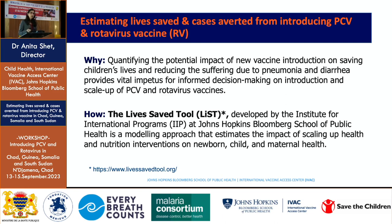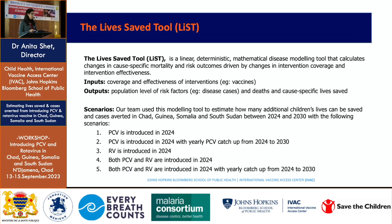The reason we're doing this quantification is to give us some impetus on how to make informed decisions on introduction of these new vaccines. The way we model these numbers is using an instrument called the Lives Saved Tool. This is one of many models, developed by the Institute of International Programs at Johns Hopkins. It helps us understand the impact of many health interventions on newborn, child, and maternal health. In this case, vaccines are the intervention, with inputs including coverage and effectiveness.